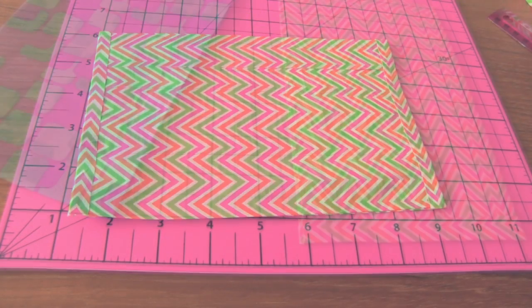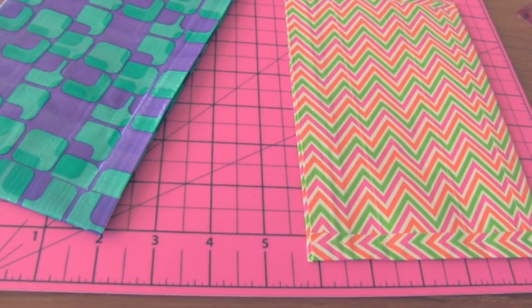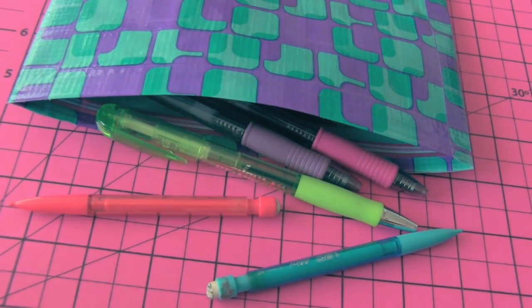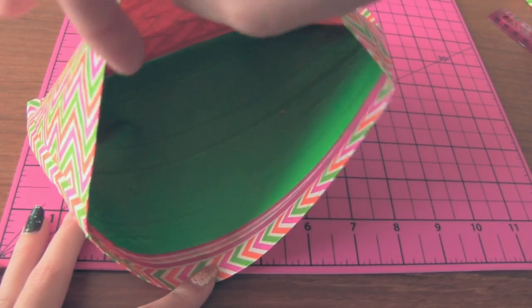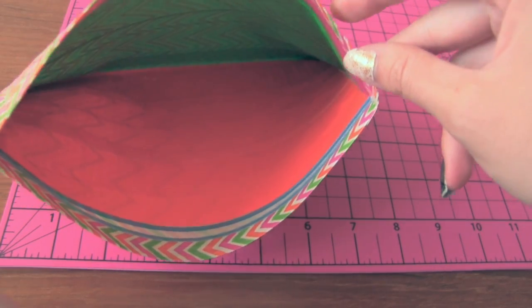Now you have your very own ziplock pencil pouch. Be sure to share a picture with me on Instagram hashtag socraftastic if you make one of your own. The inside of mine has lime green on one side and neon orange on the other.